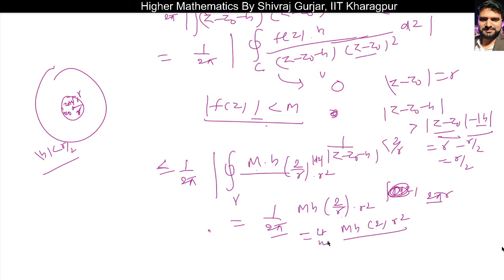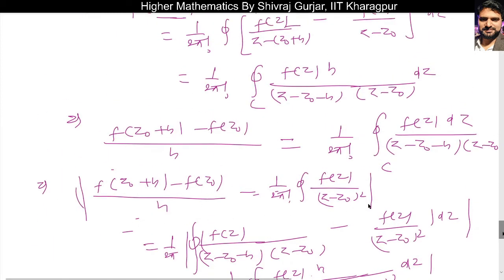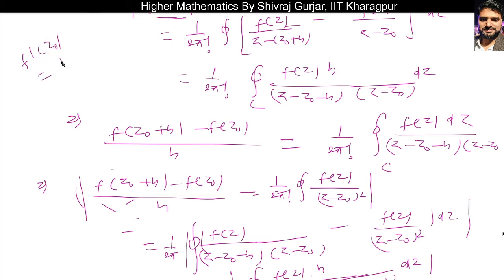Now applying the limit as h tends to zero: since |h| approaches zero and everything else is finite, this whole expression goes to zero. So the right-hand side tends to zero, and therefore the left-hand side also approaches zero. Since it's a modulus it cannot be negative, so it must equal zero. Therefore f'(z-naught) equals 1 over 2pi*i times the integral of f(z) divided by (z minus z-naught)^2, hence proved.